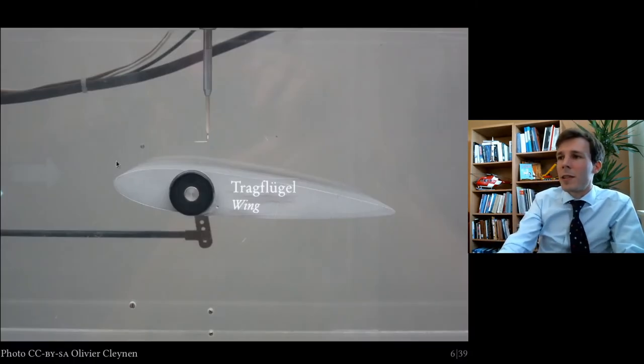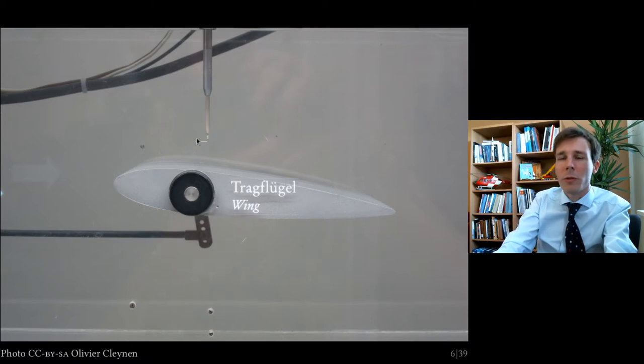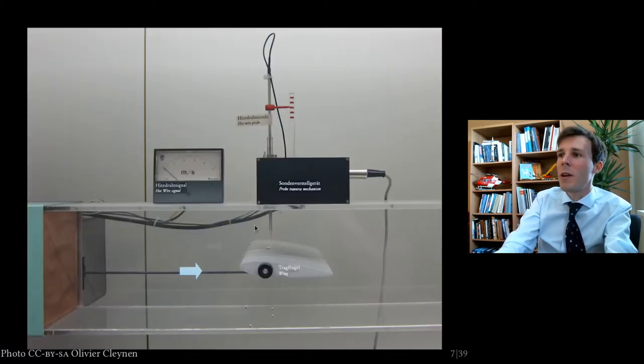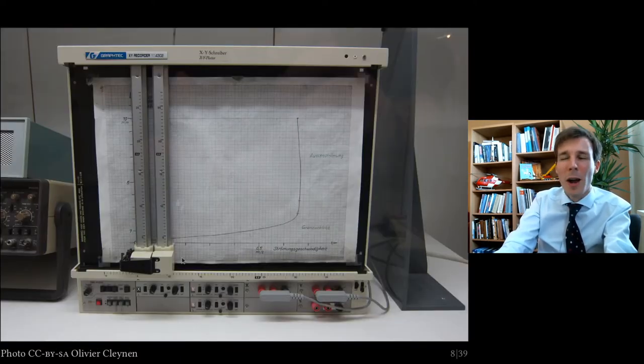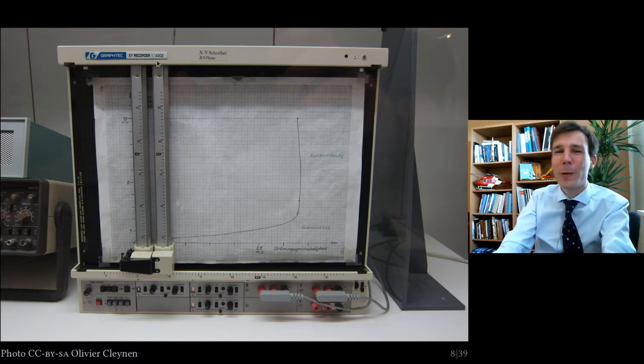So if you take any object, this is a wing, a profile in a wind tunnel where the flow comes from left to right. And you go and measure the velocity very close to the surface here. And you go down with your probe here. The probe is in a tiny wind tunnel. It comes down. You measure the velocity in meters per second until you come very close to the wall.